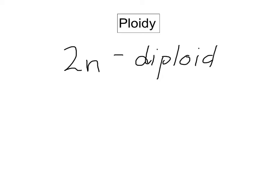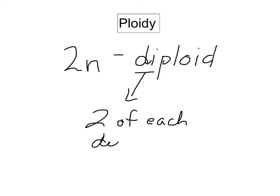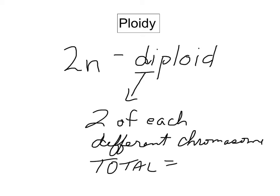Diploid refers to the fact that we have two of each different chromosome. You get one from mom, you get one from dad, and together how many total chromosomes do humans have? The total number of chromosomes equals 46. So we are diploid — we have two of each different chromosome, so we have a pair.